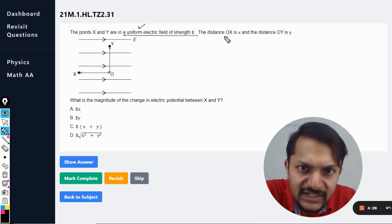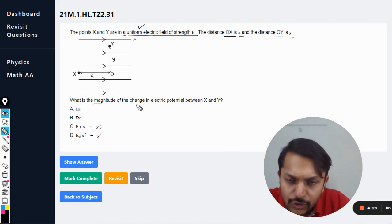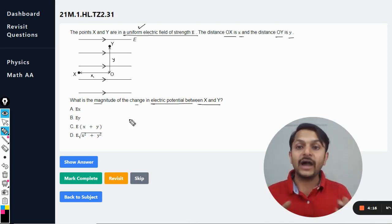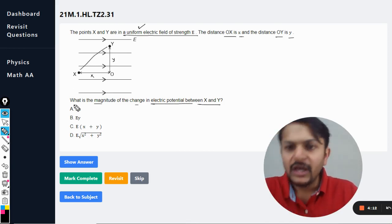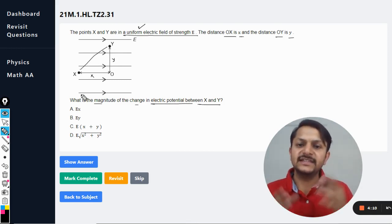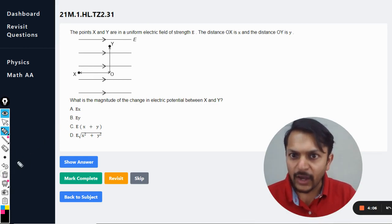So the distance OX is x and the distance OY is y. Okay, what is the magnitude of change in electric potential between X and Y? Okay, so they're talking about these two points now and we want to find what is the change in the electric potential between X and Y.